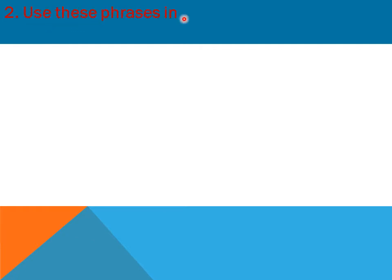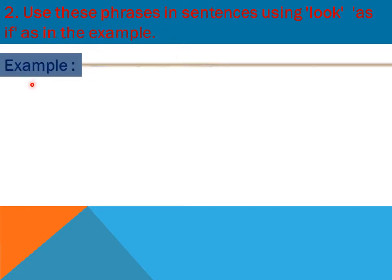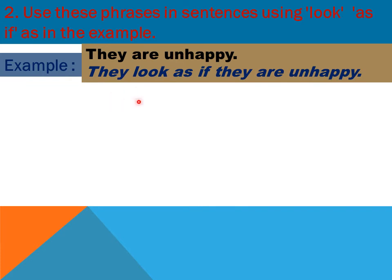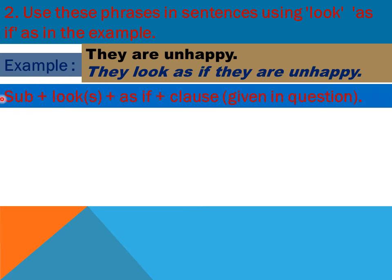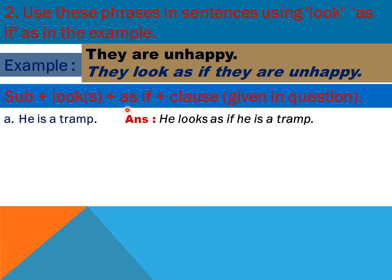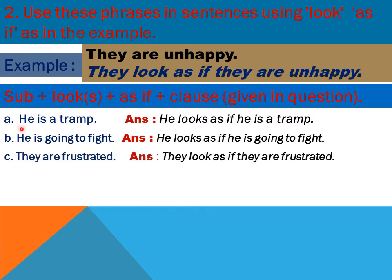Question 2: use these phrases in sentences using 'look as if.' The example given is: 'They are unhappy' becomes 'They look as if they are unhappy.' The structure is: subject + looks/look + as if + clause from the question. For example: A — 'He is a tramp' becomes 'He looks as if he is a tramp.' B — 'He is going to fight' becomes 'He looks as if he is going to fight.'